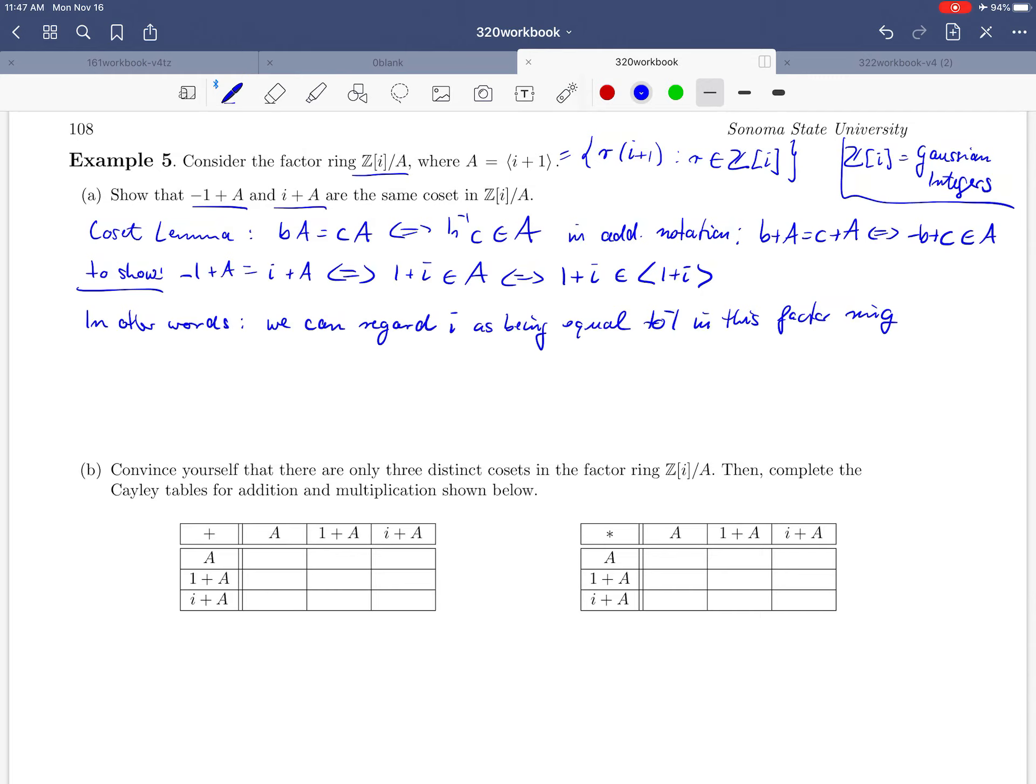Another way that we could come up with this is we have A is the ideal i plus 1. And therefore, we have that i plus 1 plus this ideal is the same as the ideal itself. But that you could view as 0 plus i plus 1. And so here we have i plus 1 and 0 are different representatives of the same coset. And so they essentially behave the same. So we can think of i plus 1 as equal to 0 in this factoring.